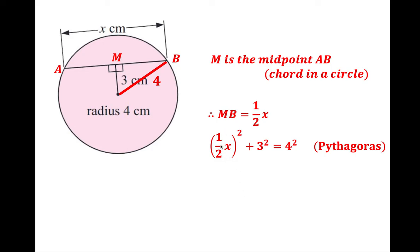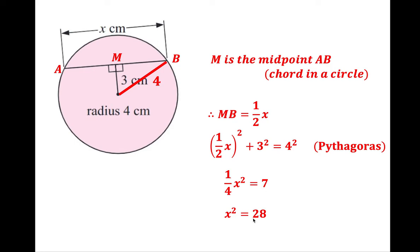Let's do the algebra. (½X)² — you square the half and the X — gives you ¼X². Over here, 16 minus 9 gives us 7. So ¼X² = 7. Multiply both sides by four: X² = 28. Take the square root on both sides: X equals √28. I only put the positive answer because X must have a positive length. And √28 simplifies to 2√7 — because 28 is 4 times 7, and we can take the square root of 4 to get 2.